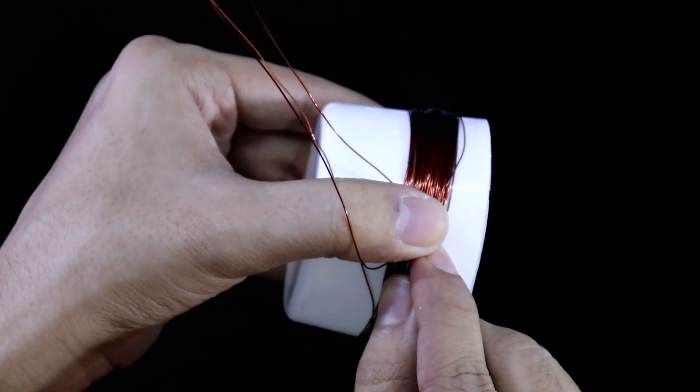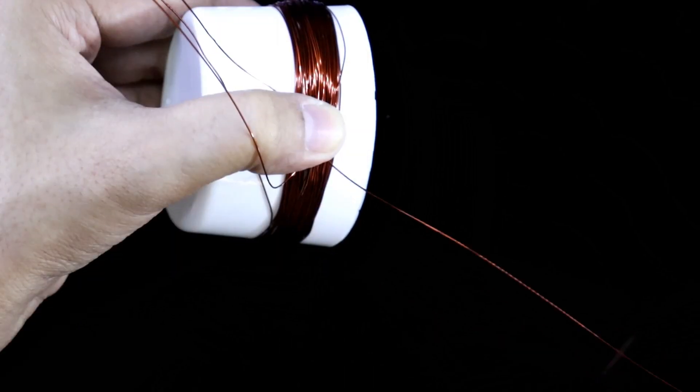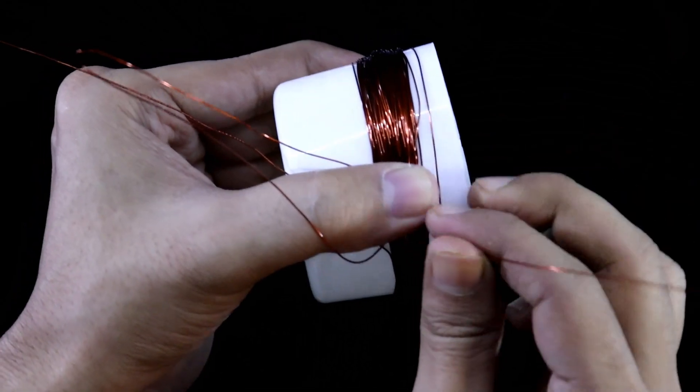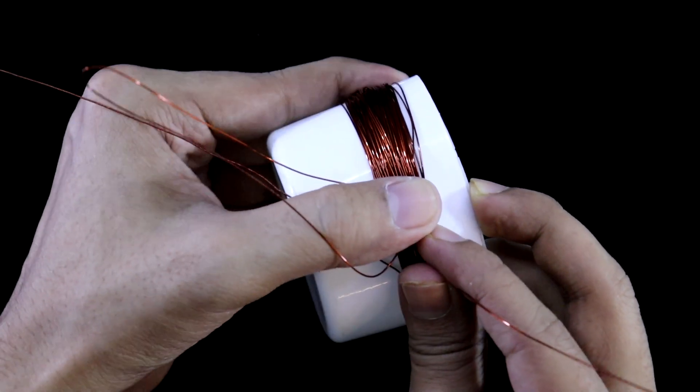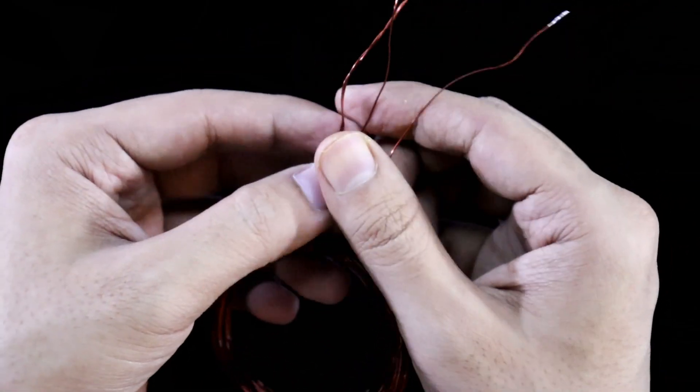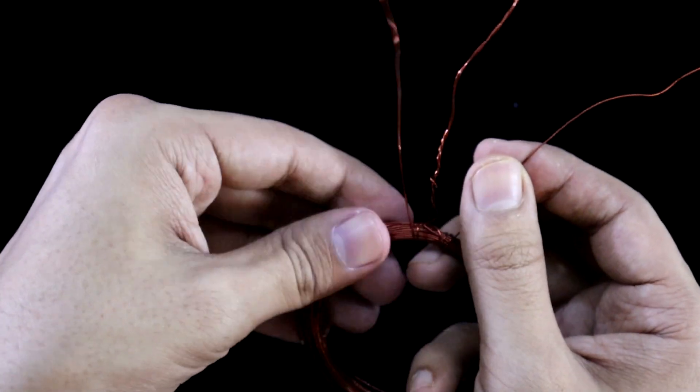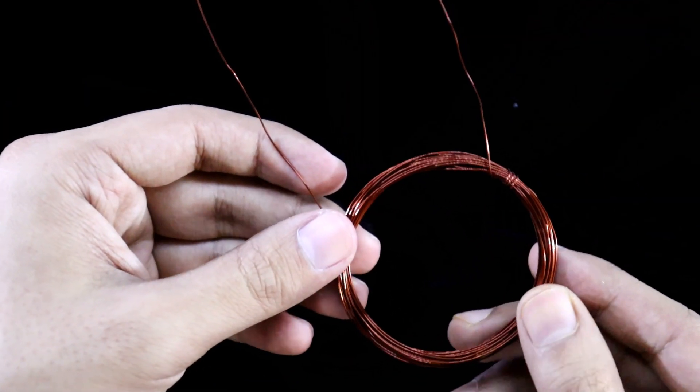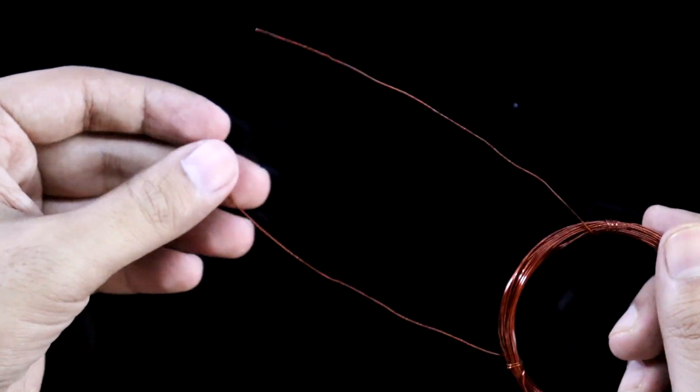30 turns completed. Okay. So now take it out carefully. This is the coil. These two are ends. And this is the center tap. And in the same way I have made this coil. It has two pins.